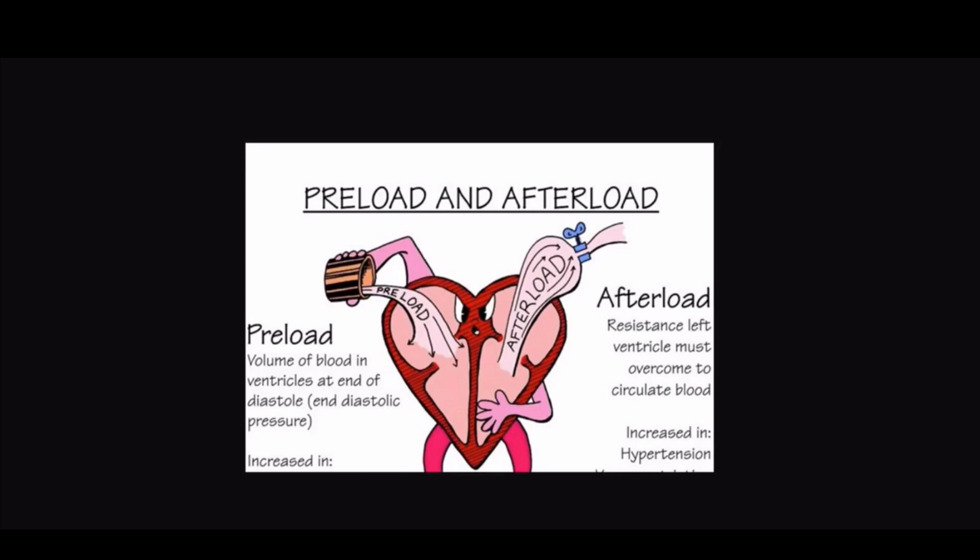Normal central venous pressure is 2 to 6 millimeters of mercury, and that is a representation of our right atrial pressure. Pulmonary capillary wedge pressure has a normal value of 4 to 12 millimeters of mercury — you may also hear it referenced as the pulmonary artery wedge pressure. The only way to obtain the pulmonary capillary wedge pressure is to have a pulmonary artery catheter placed in the heart. This allows us to wedge a balloon in the pulmonary artery to determine the pressure of the left atrium. So, the pulmonary capillary wedge pressure is a reflection of left atrial pressures.